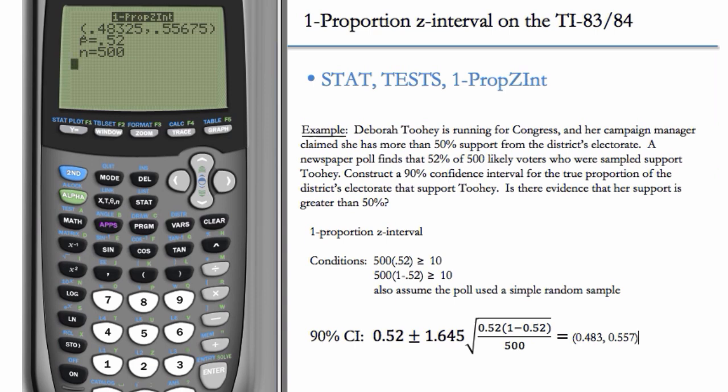No, because 50% is contained in this interval. If the entire interval were above 50%, as in an interval from 0.52 to 0.58, then we would have evidence that her support was greater than 50%. But in this case, it's inconclusive.